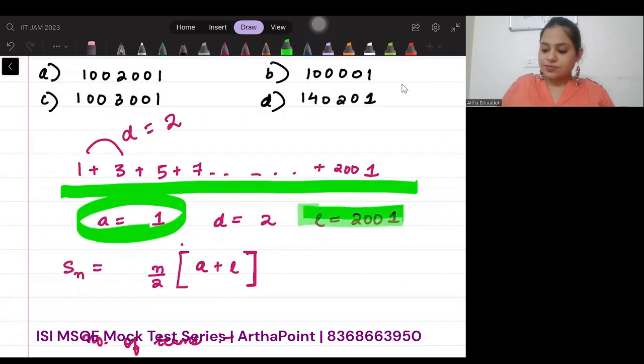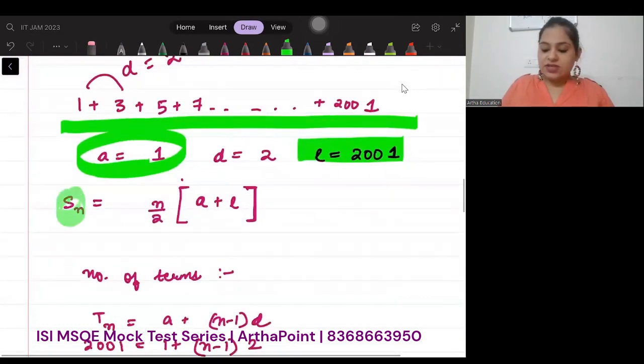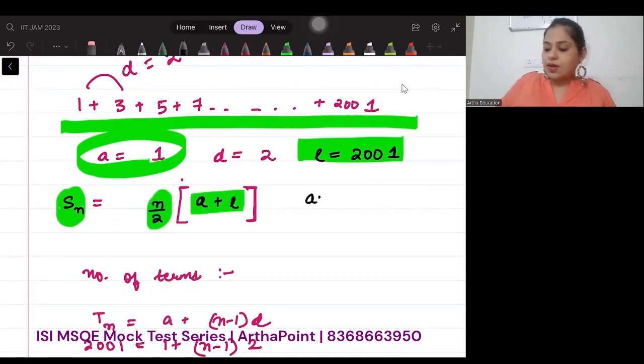Now we know that if we have a series which is in arithmetic progression like in this case, then I can give the sum S_n as n by 2 times A plus L, where A is the first term and L is the last term.